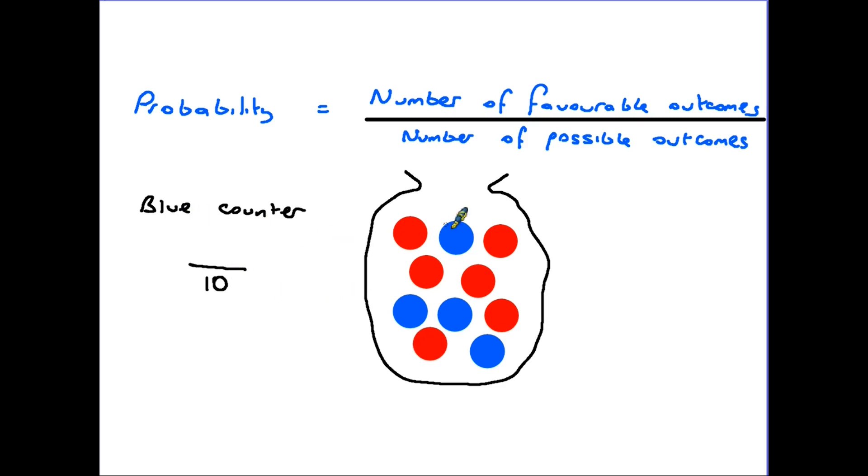We're looking for a blue counter so that would be a favourable outcome. We look at how many there are one two three four. So there are four opportunities for you to draw out a blue counter. Therefore the probability is four out of ten.